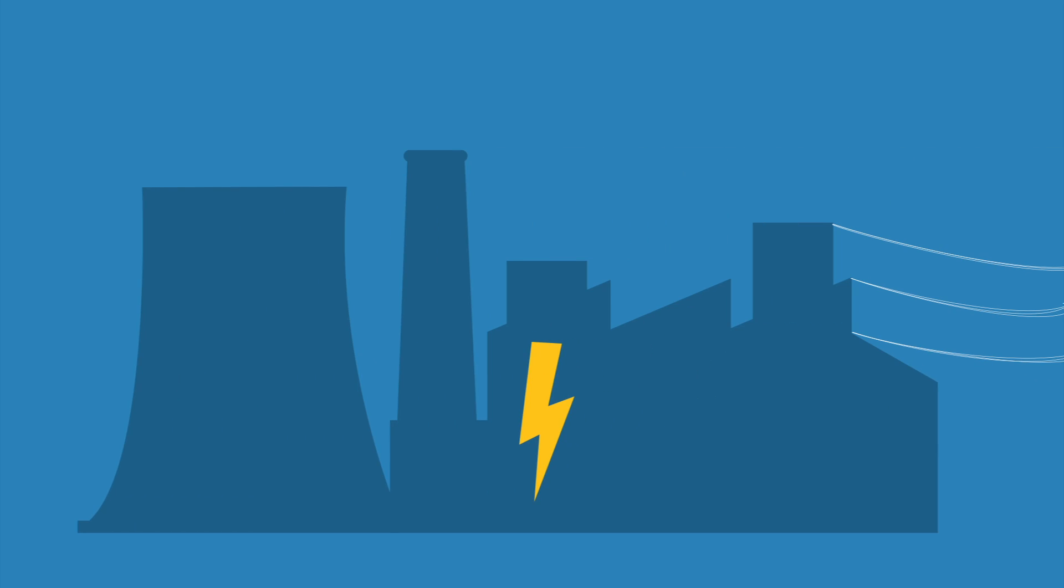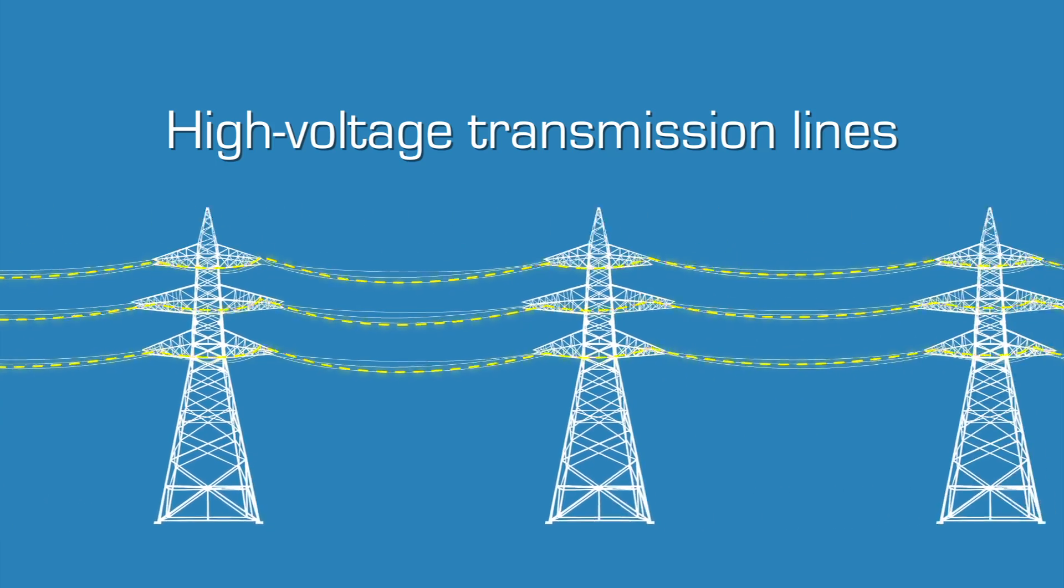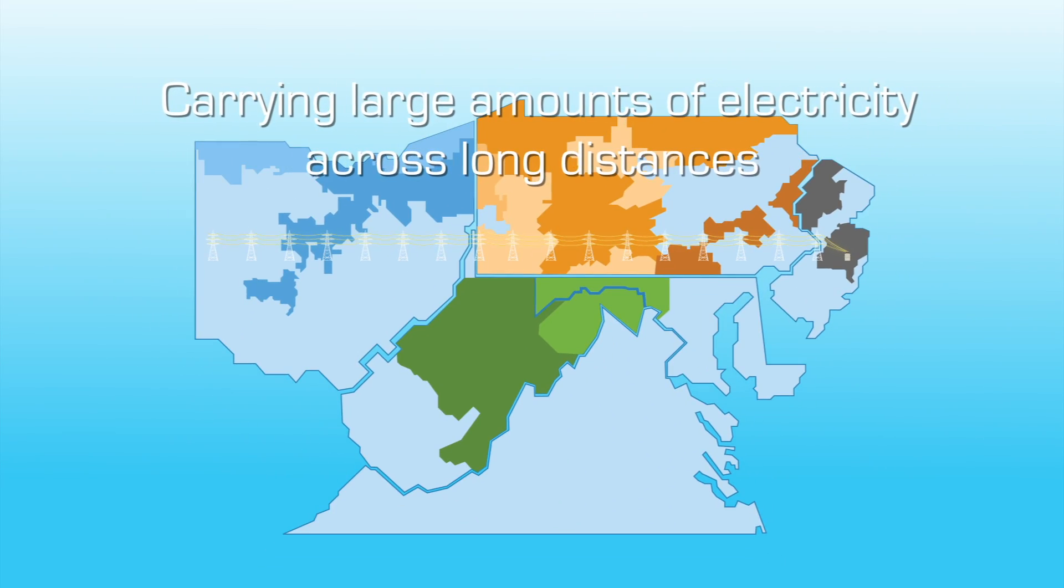When it leaves the generating facility, electricity first travels across a network of high voltage transmission lines. These lines are the backbone of the electric grid, capable of carrying large amounts of electricity across long distances.